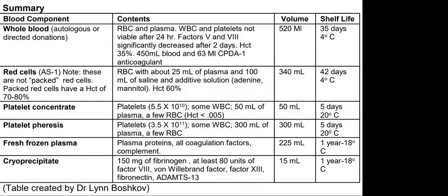Here is a summary of the blood components we use in our setup: whole blood with its volume and shelf life, red blood cells with volume per unit, platelet concentrate, platelet pheresis, fresh frozen plasma, and cryoprecipitate — these are the blood components we typically use.